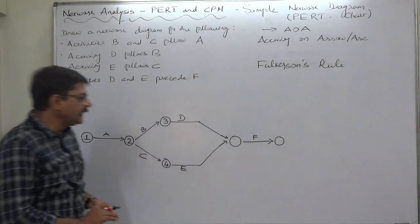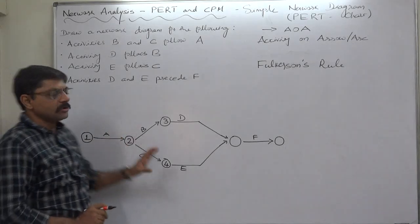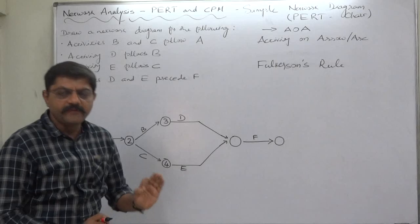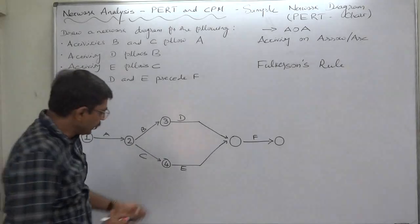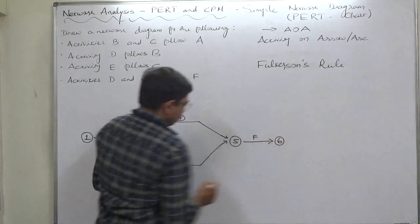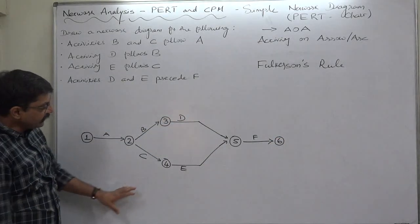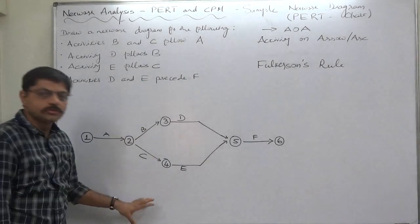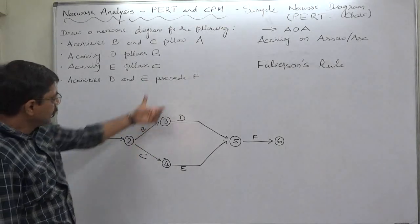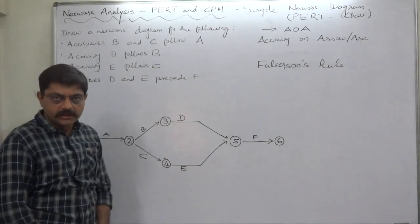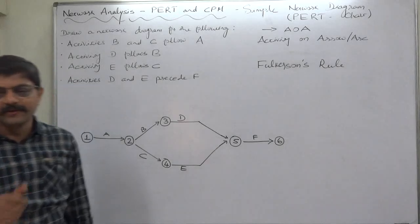So even in case of merge or burst event you will not face any problem in numbering. This is turn of 5 and this is turn of 6. Yes, whenever you have two or more events to number, then follow the vertical order. Yes that's it for now, thank you very much.